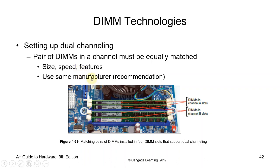Setting up for dual channeling: a pair of DIMMs in a channel must be equally matched — same size, same speed, same features, and if possible the same manufacturer. In theory, dual-channel configuration doubles the data transfer rate compared to single-channel mode. A matching memory module pair is bundled along with parallel access to both memory channels.